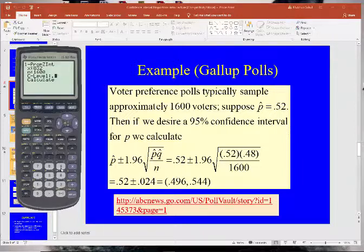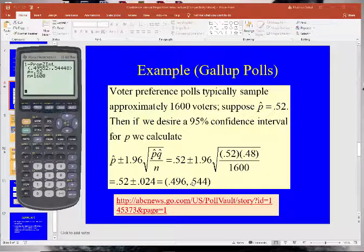We want a 95, and hit calculate, and look at this. 0.4955, 0.496, got it. 0.544, 0.544, right there.